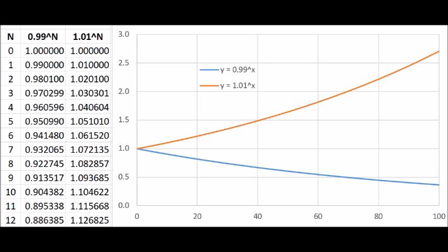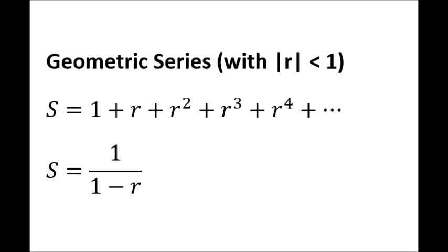Why does r to the n plus 1 go to 0? Just look at the blue line on this graph. A number like 0.99 gets smaller and smaller each time we multiply it by itself. Eventually that goes to 0 after many, many multiplications, like in an infinite summation. Meanwhile, a number greater than 1, like 1.01, gets bigger and bigger each time we multiply it by itself.